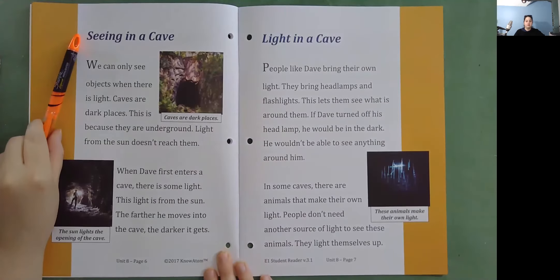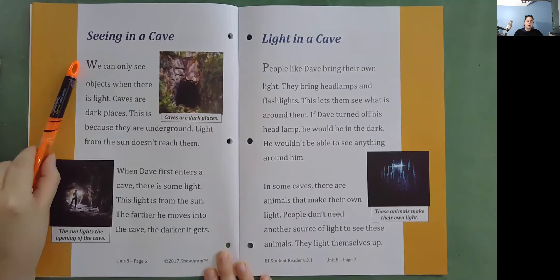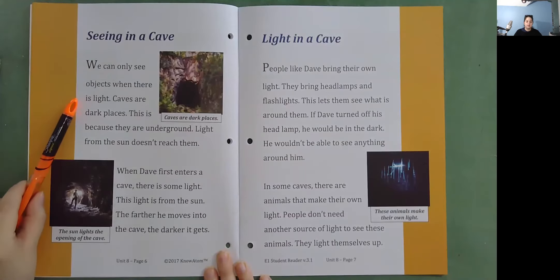Seeing in a cave. We can only see objects when there is light. Caves are dark places. This is because they are underground. Light from the sun doesn't reach them.